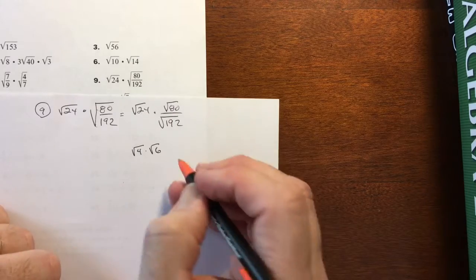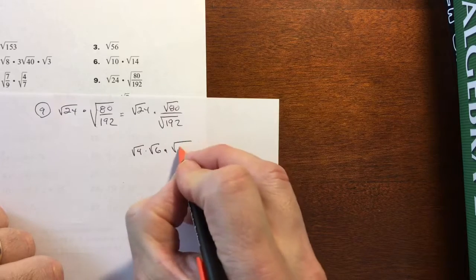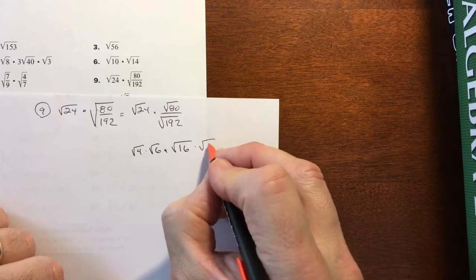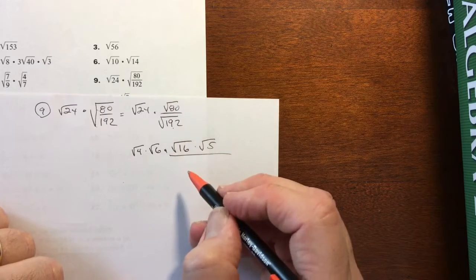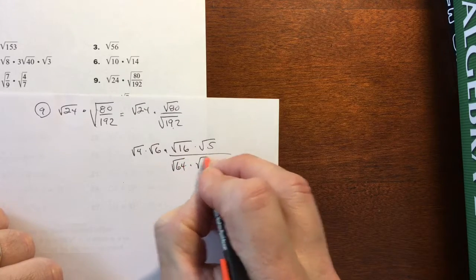24 is going to be a square root of 4 times square root of 6. Again, there's other ways to do this. This is just one of many. There's the big dot. This is square root of 16 times the square root of 5. And this, I think, is 64 times 3. So square root of 64 times the square root of 3.